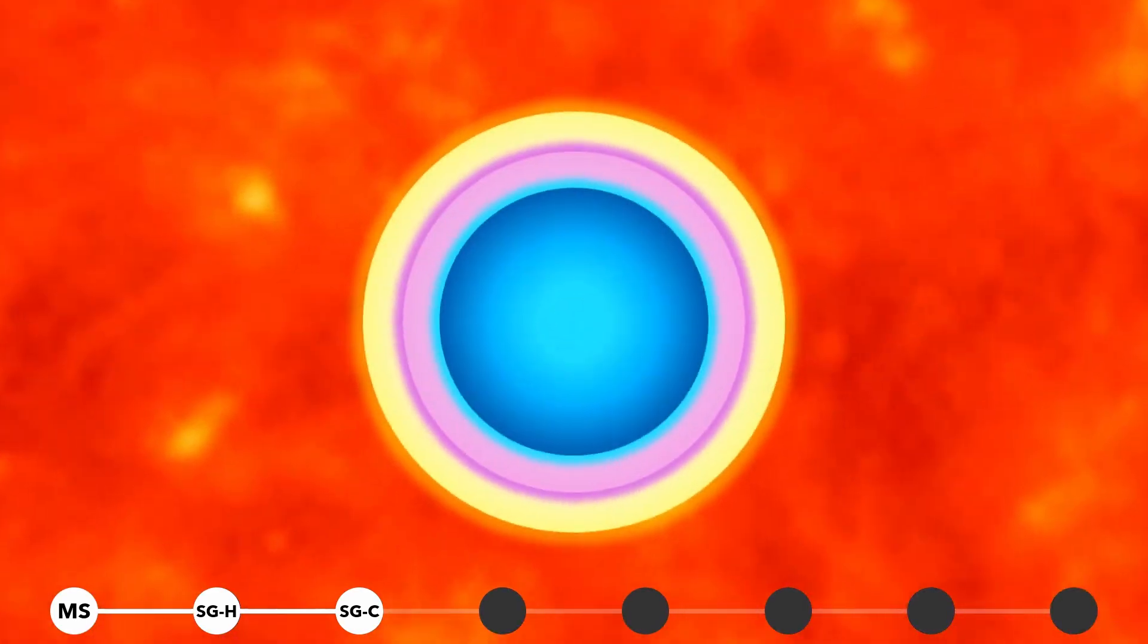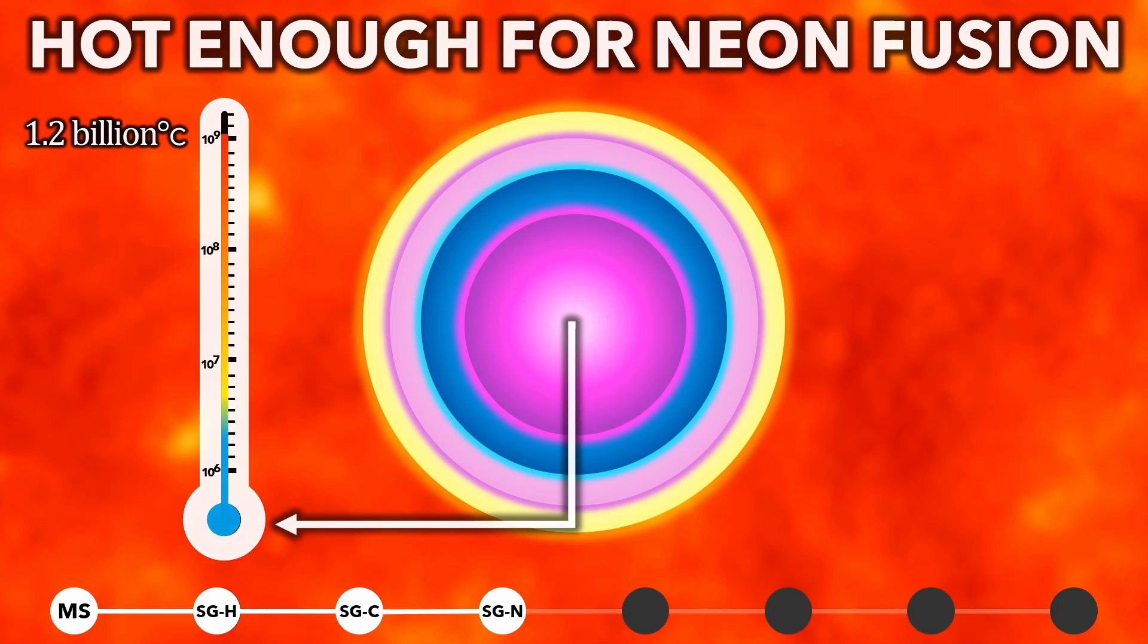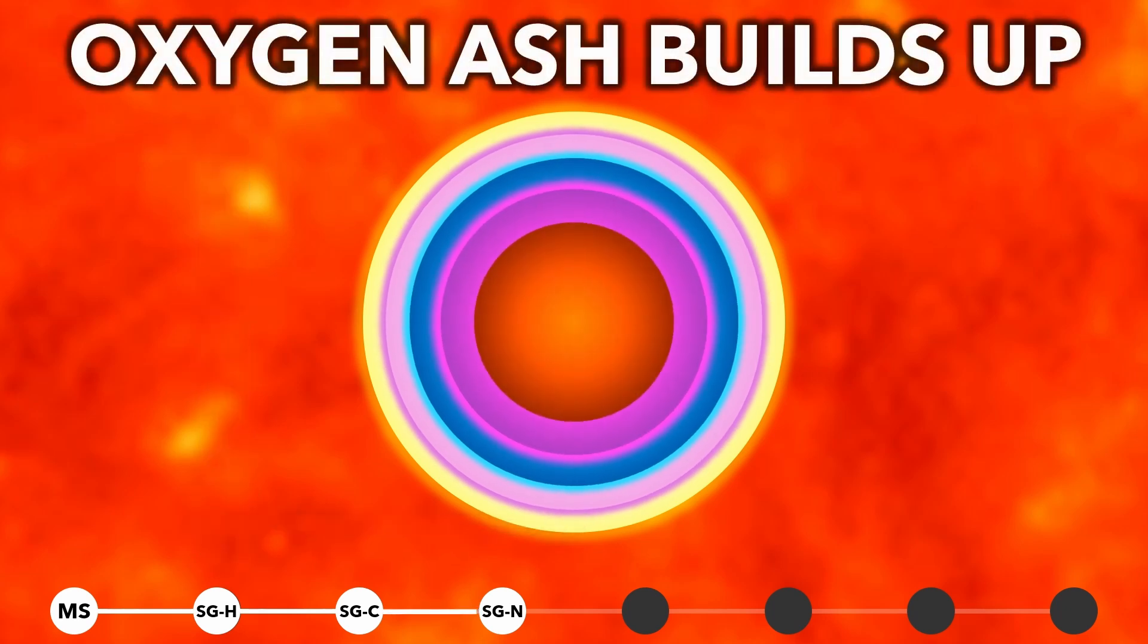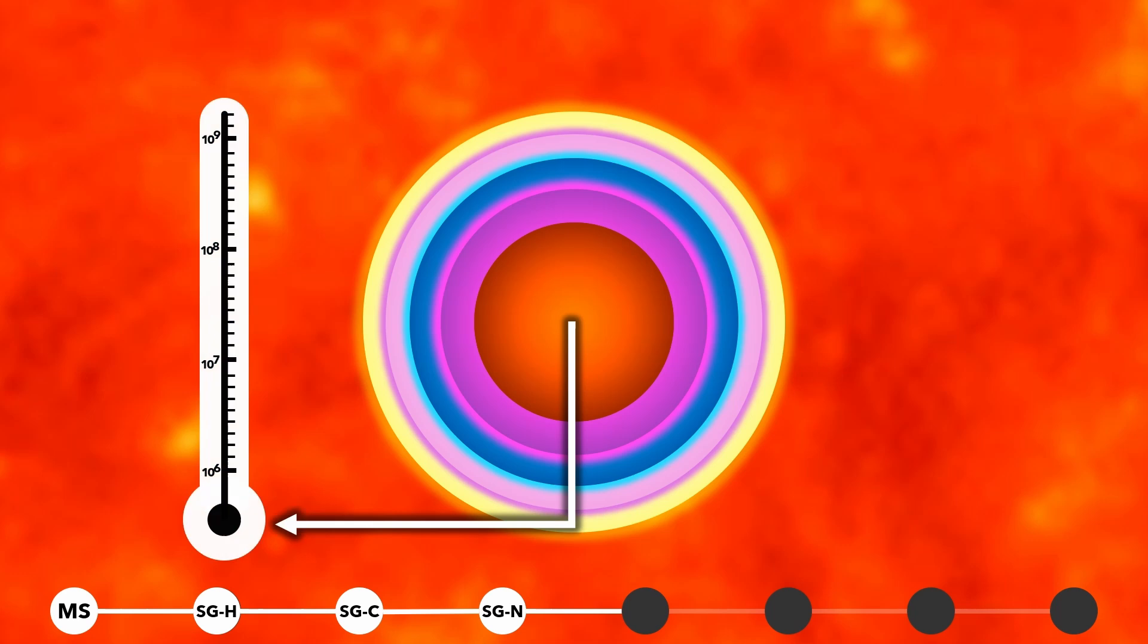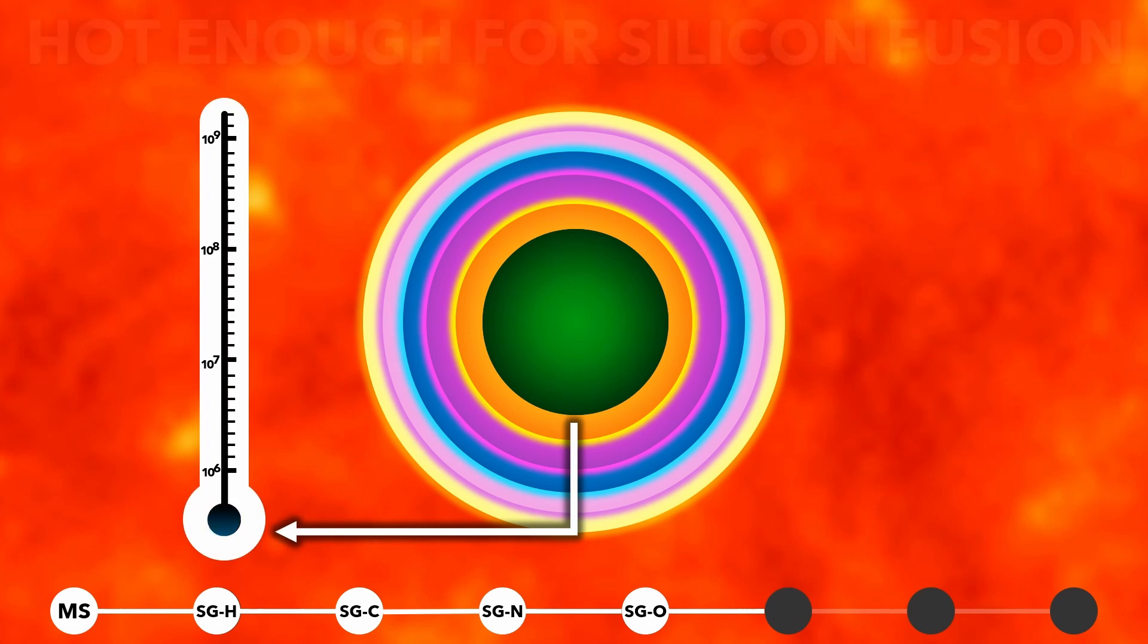Over the next million years, neon ash builds up in the core. Eventually, the core gets hot enough to fuse neon into oxygen. Oxygen ash builds up over tens of thousands of years, and eventually gets hot enough to fuse into silicon. Finally, silicon ash builds up and fuses into iron.